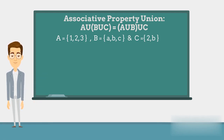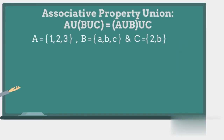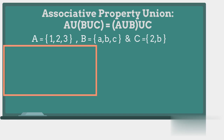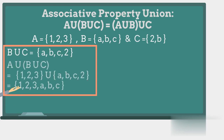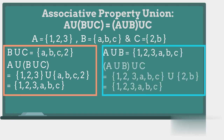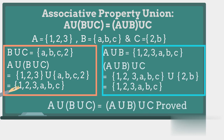To prove the associative property of union, we need to prove that A union (B union C) is equal to (A union B) union C. First, we solve B union C, which is {A, B, C, 2}. Then the result of A union (B union C) is {1, 2, 3, A, B, C}. Similarly, we find the value of (A union B) union C, which is also the same. This proves the associative property of union of sets.